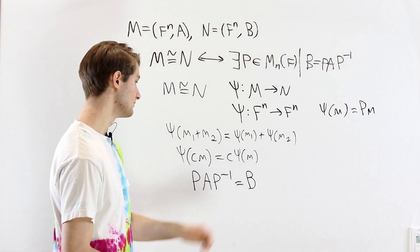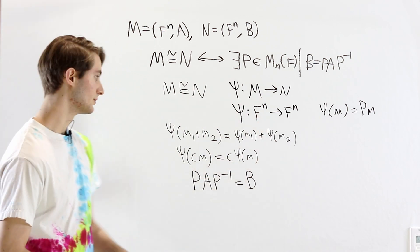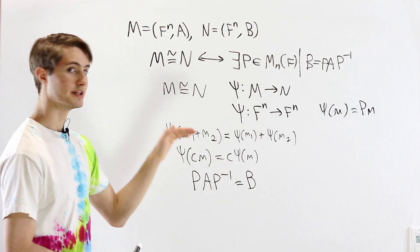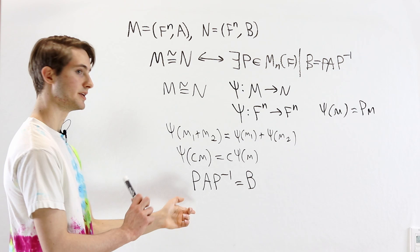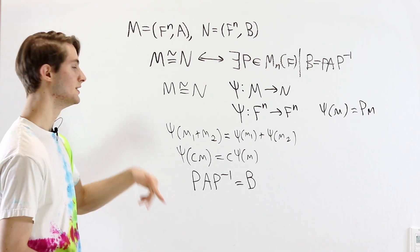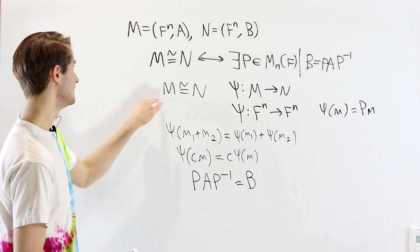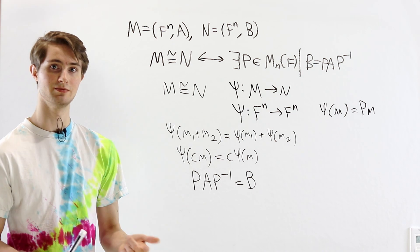Starting with PAP inverse equals B, you multiply by P on the right side. And then because it's a linear transformation and it's linear in x, you show that P describes an isomorphism and then you get the isomorphism like you want.